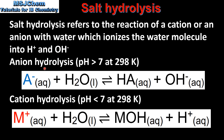Anion hydrolysis gives a pH of greater than 7 at 298 K. In anion hydrolysis, the conjugate base of a weak acid is strong enough to hydrolyze the water molecule to produce the hydroxide ion. In cation hydrolysis, which gives a pH of less than 7 at 298 K, the conjugate acid of a weak base is strong enough to hydrolyze the water molecule to produce the hydronium ion.